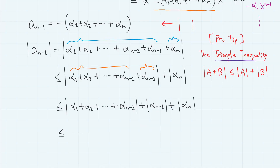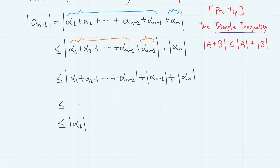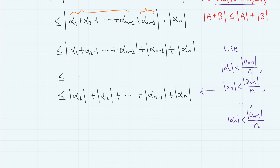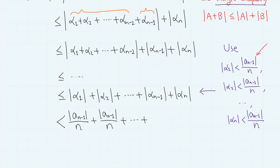We can go on and on, so in the end we have the absolute value of alpha 1 plus the absolute value of alpha 2 plus ... plus the absolute value of alpha n. Now we use our initial assumption that all roots have absolute values less than the absolute value of a_{n-1} over n. Then this sum is less than the absolute value of a_{n-1} over n, added n times in total, which equals the absolute value of a_{n-1}.